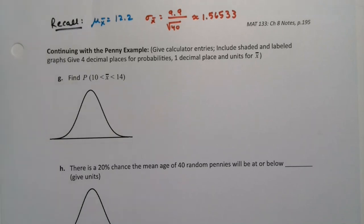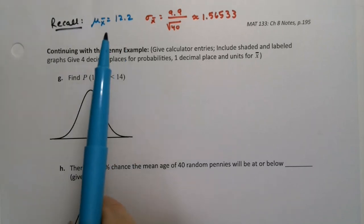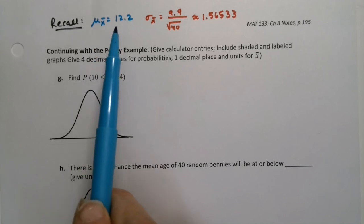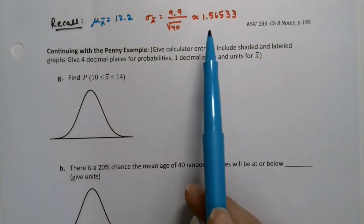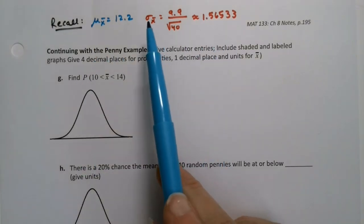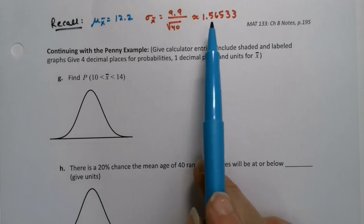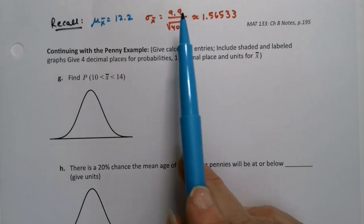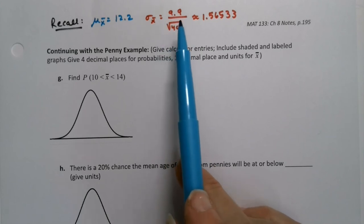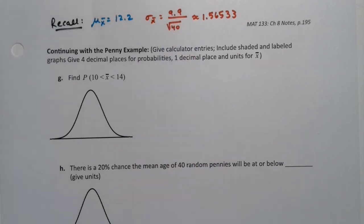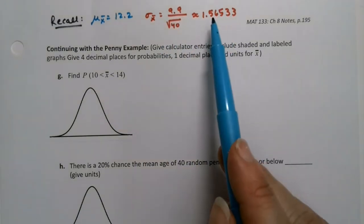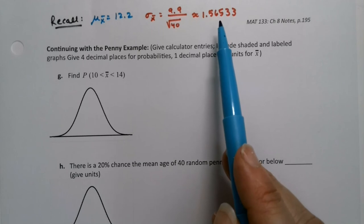Continuing with the same penny example, remember we just said the mean, which was the center, is 12.2. The spread, which is the standard error sigma sub x bar, is 1.56533, or 9.9 over the square root of 40. Of course, the one with the square root is more accurate because it's not rounded. But nevertheless, they both should be okay. Just keep several decimal places and you should be fine.